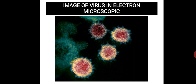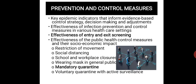In electron microscope images, multiple replicated coronaviruses can be seen. Prevention and control measures include key epidemic indicators for evidence-based strategy, infection prevention and control effectiveness in healthcare settings, entry and exit screening, and public health control measures — including restriction of movement, social distancing, school and workplace closures, wearing masks in public, and both mandatory and voluntary quarantine with active surveillance.